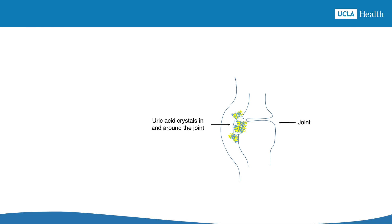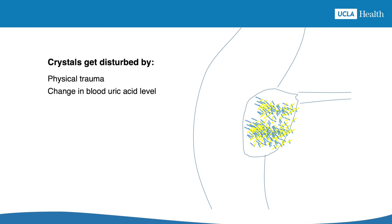In someone with gout, uric acid crystals have already formed in and around the joints — the crystals are always there, even between gout attacks. That's what having gout the disease means. A gout attack starts when these crystals get disturbed, either physically or by a change in blood uric acid levels. There are lots of things that can change the blood uric acid level. What you eat or drink can make it go up — red meat, beer, and high fructose corn syrup are examples of foods and drinks high in purines. Changing kidney function can also affect uric acid levels.